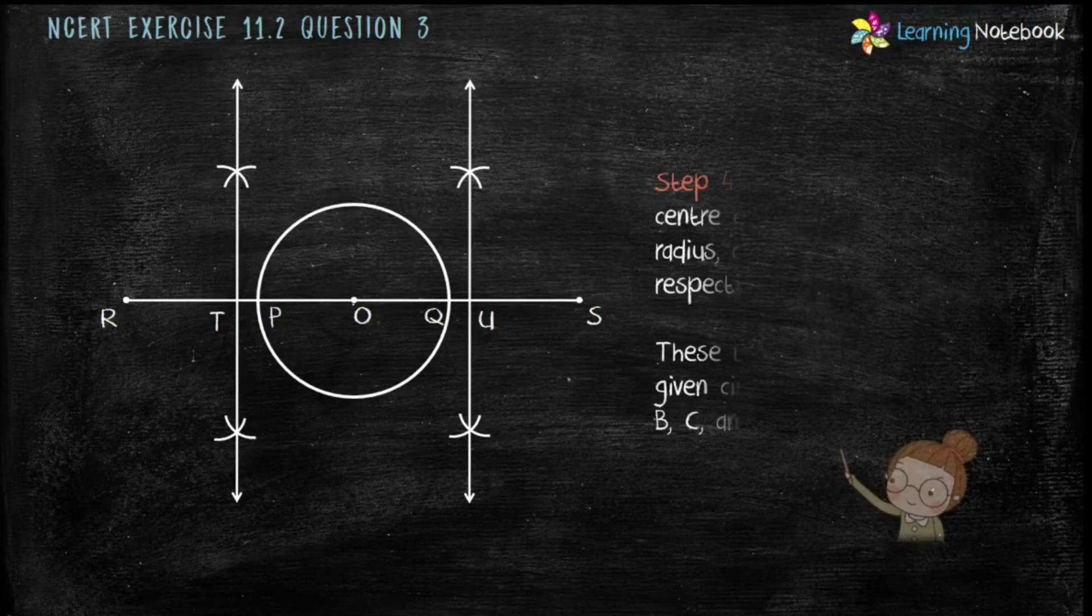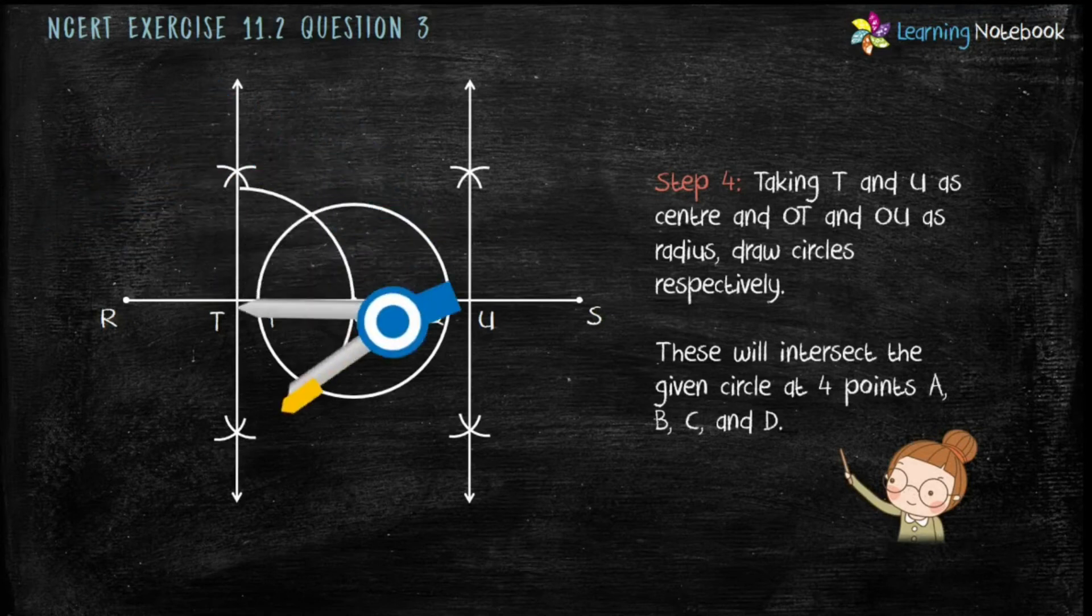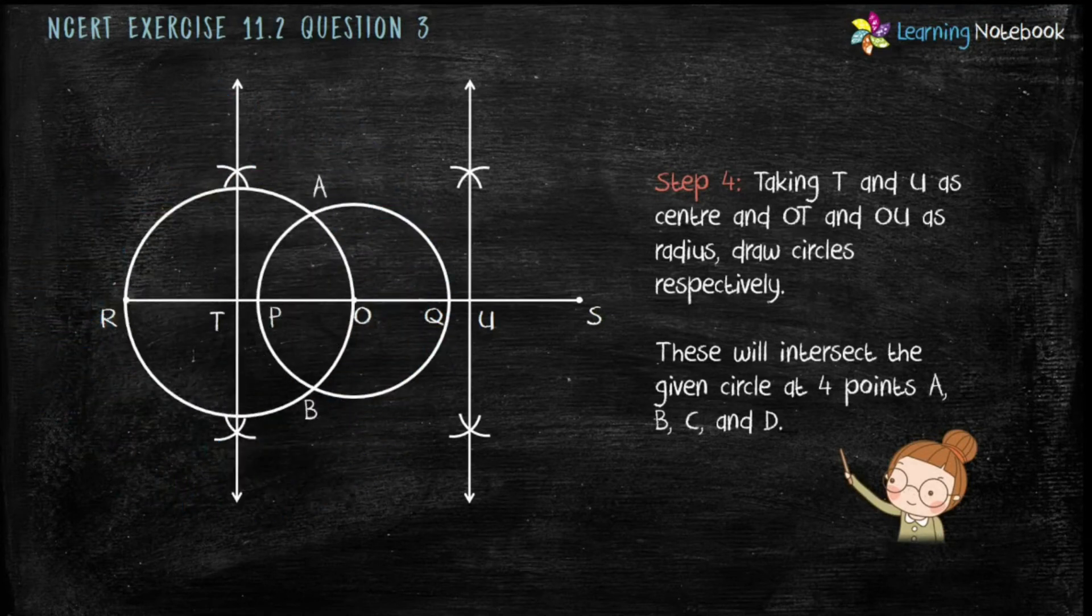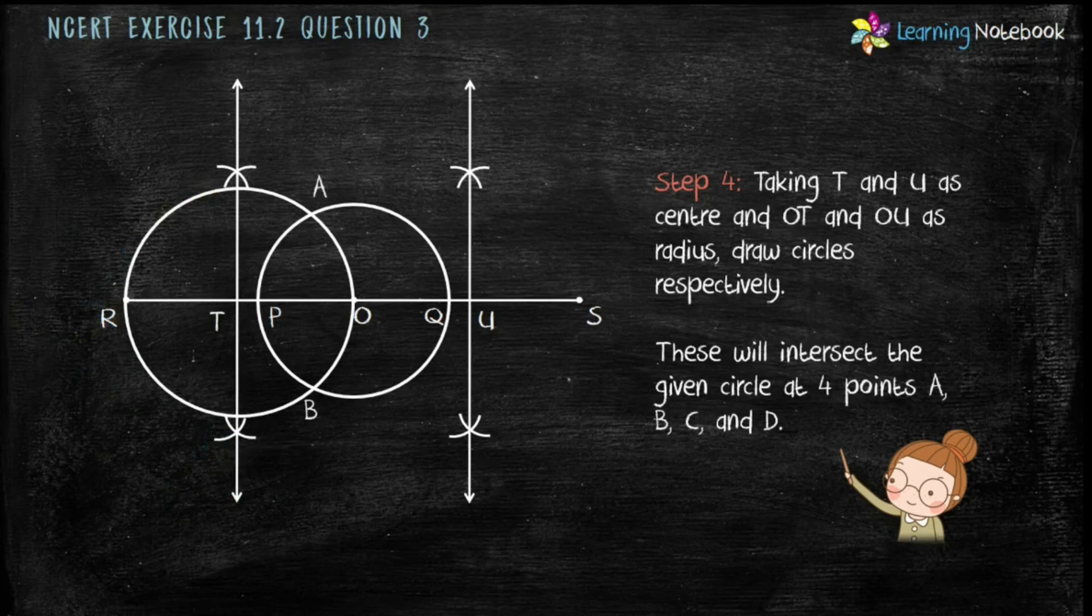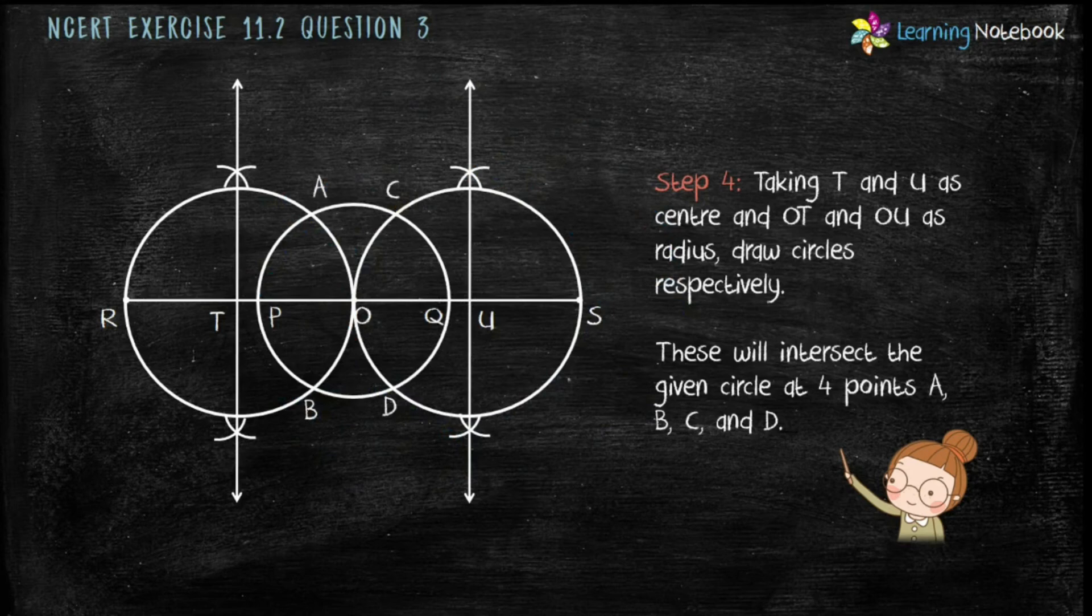Now, in step 4, take T as center and OT as radius. Draw a circle. This circle will intersect the given circle at points C and D.